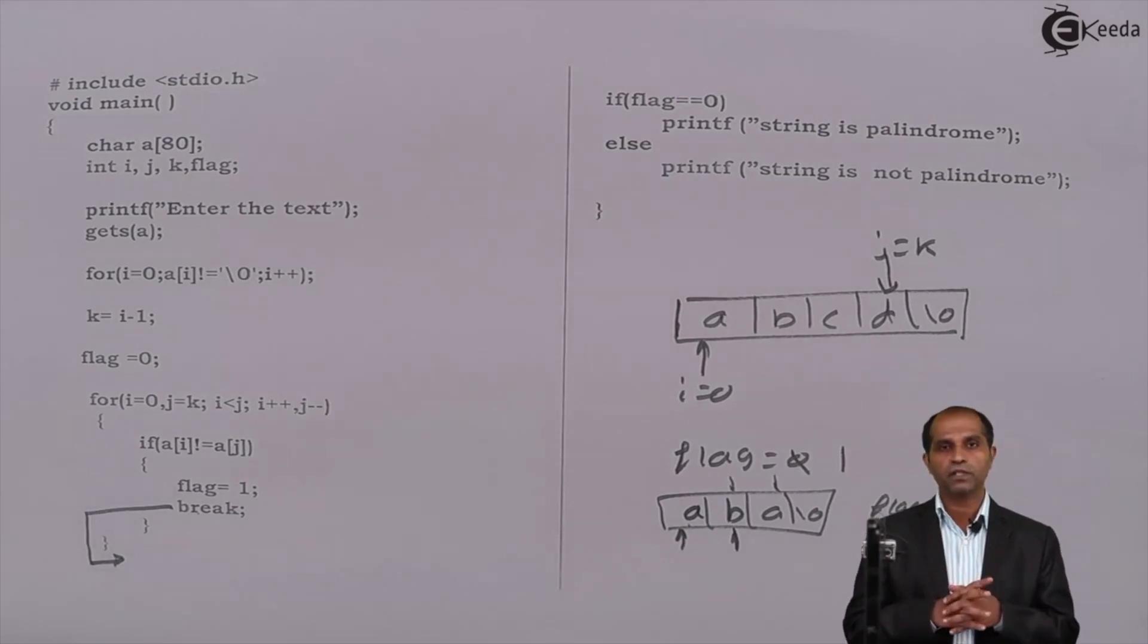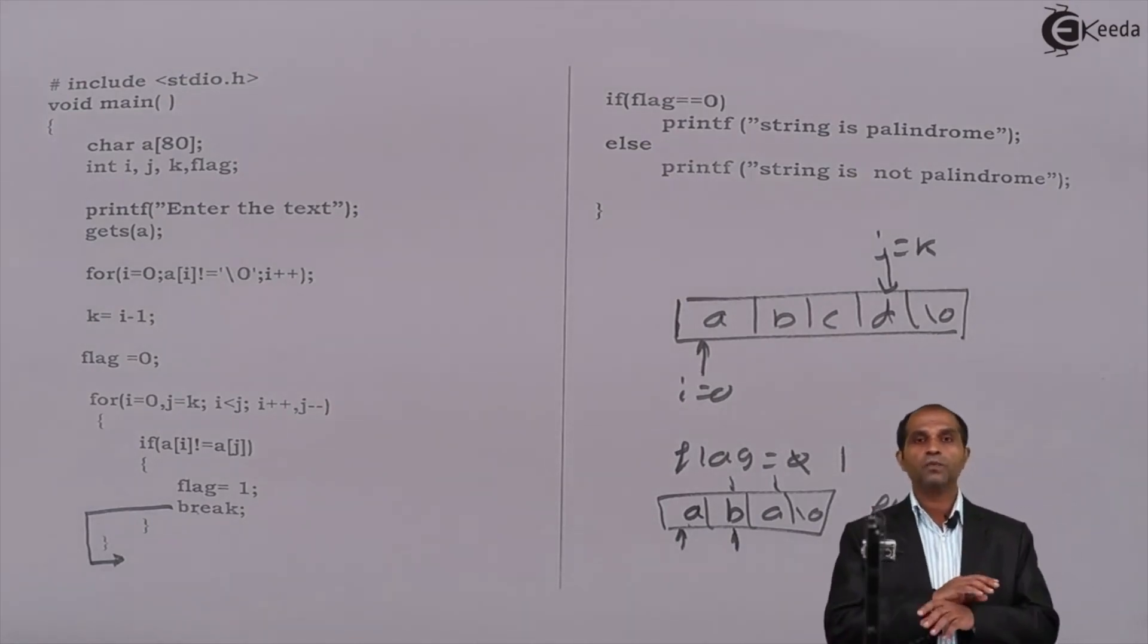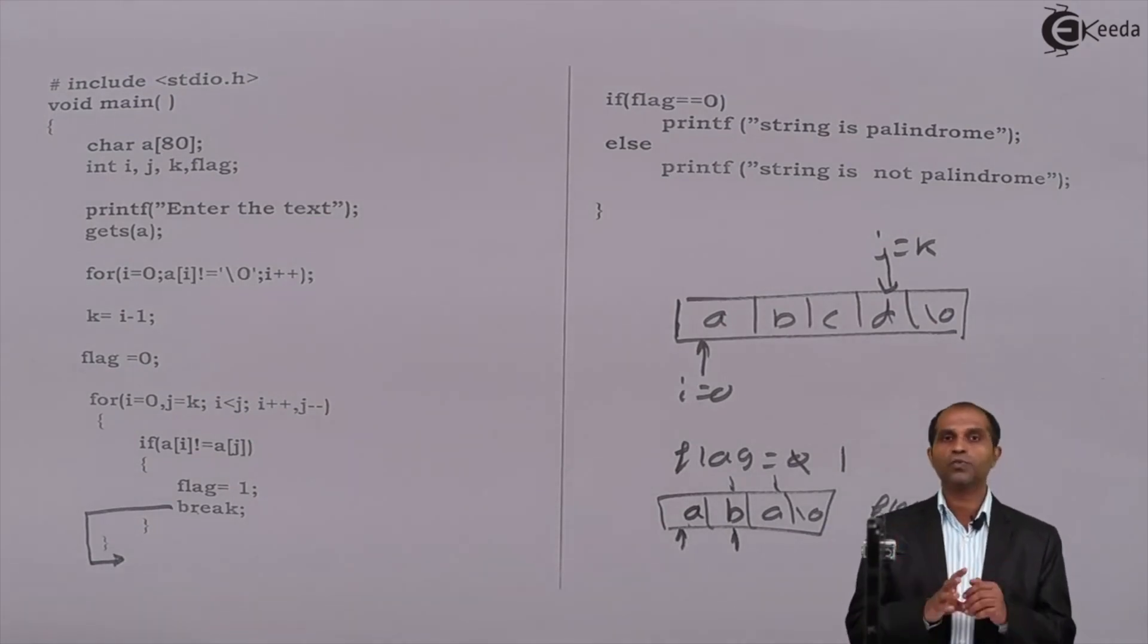We have tested whether the string is palindrome or not without using any string library functions. In this we have not stated even a single instruction of this particular string.h header file. So if they have specified that you're not supposed to use string library functions, then this program is the one which you're supposed to call. If you say that it has to be done using string library functions or if you are not specified, then also you can go ahead with string library functions. That is about the concepts of string is palindrome without using string library functions. Thank you.